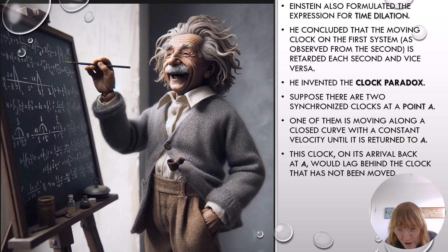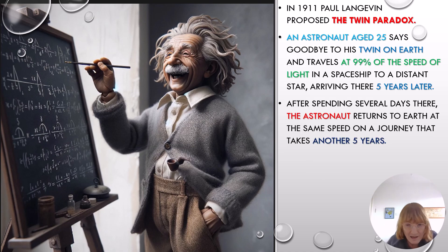Einstein also formulated the expression for time dilation. He concluded that the moving clock on the first system, as observed from the second, is retarded each second and vice versa. He invented the clock paradox. Suppose there are two synchronized clocks at a point A. One of them is moving along a closed curve with a constant velocity until it is returned to A. This clock on its arrival back at A would lag behind the clock that has not been moved.